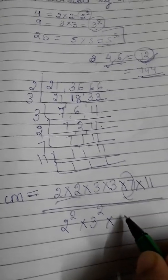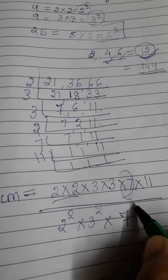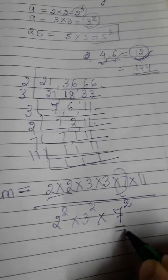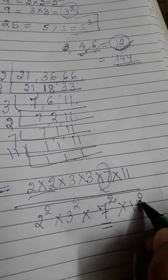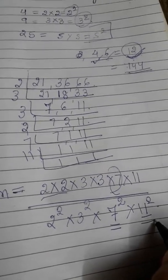Is 7 in the square form? No. So if I write it as 7², this will become a square number. And 11². This will also become a square number.